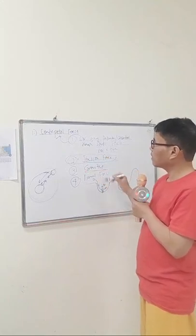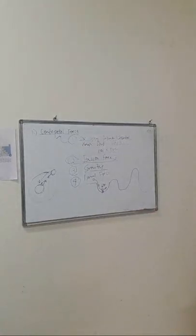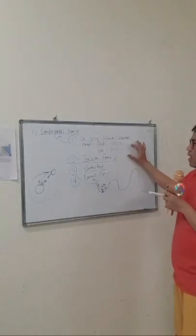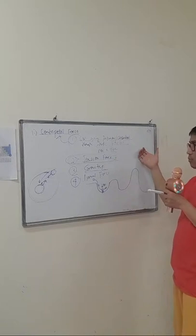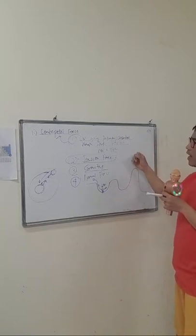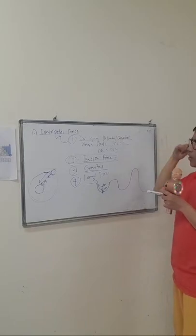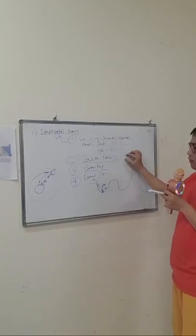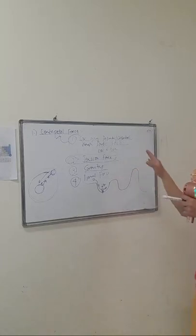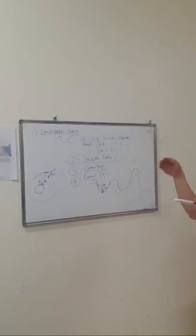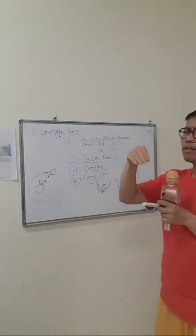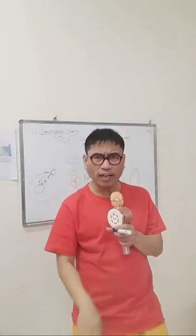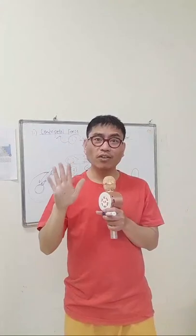So if an examination asks for four examples where centripetal force is produced: number one, a car going to a rotunda — static friction produces centripetal force; number two, a ball tied by a rope and swirled in circular motion — tension force produces centripetal force; number three, the moon and earth exerting gravity on each other — gravity produces centripetal force; number four, a ball rolling on a circular mountain — the normal force creates centripetal force.